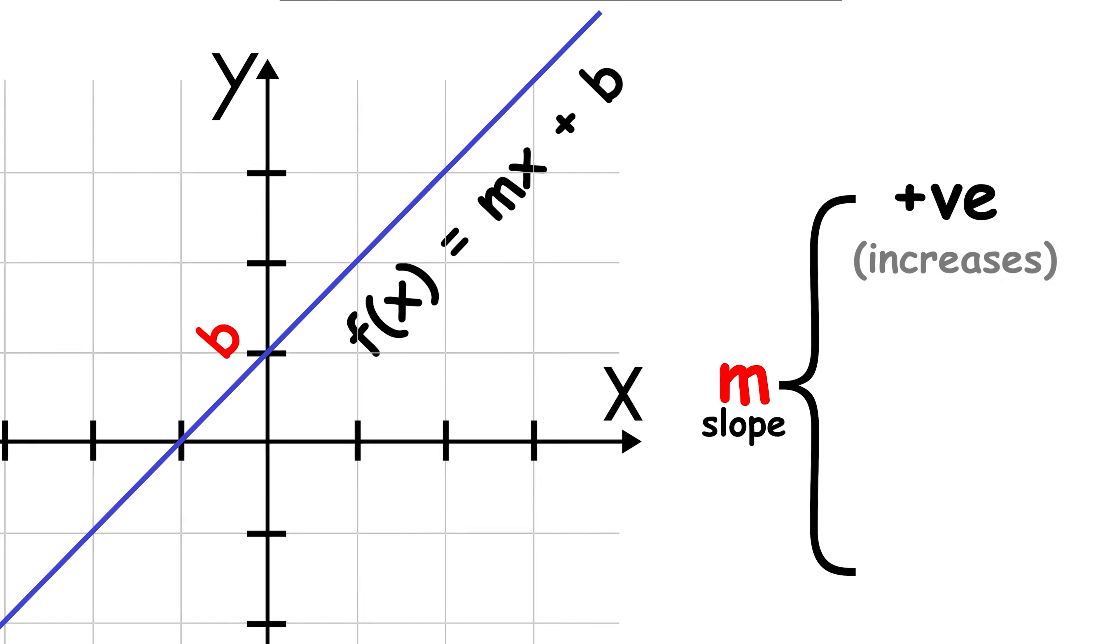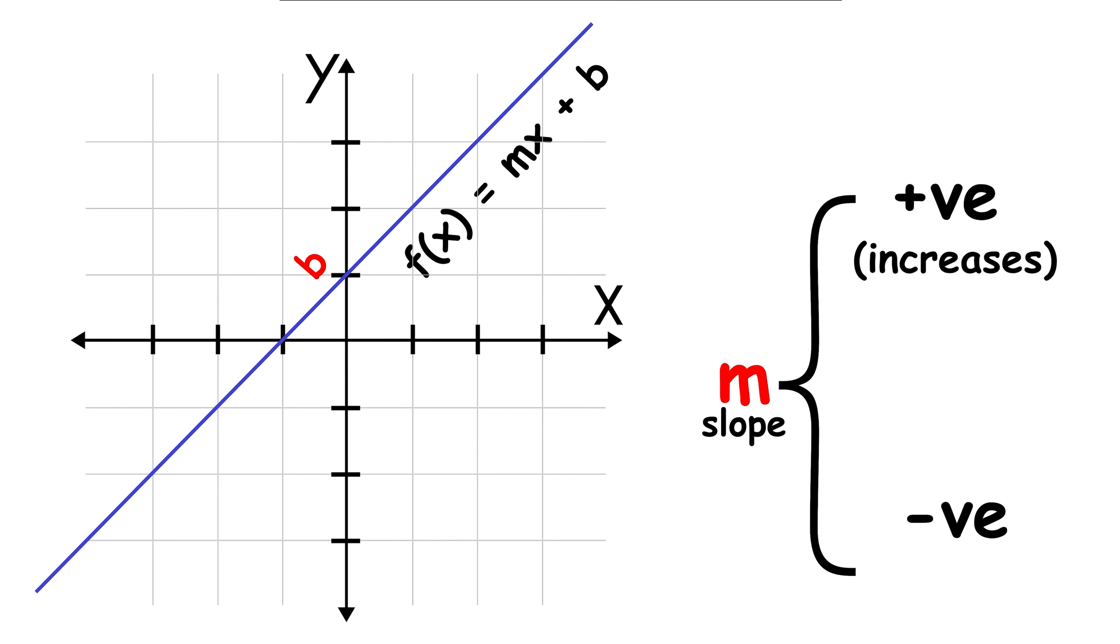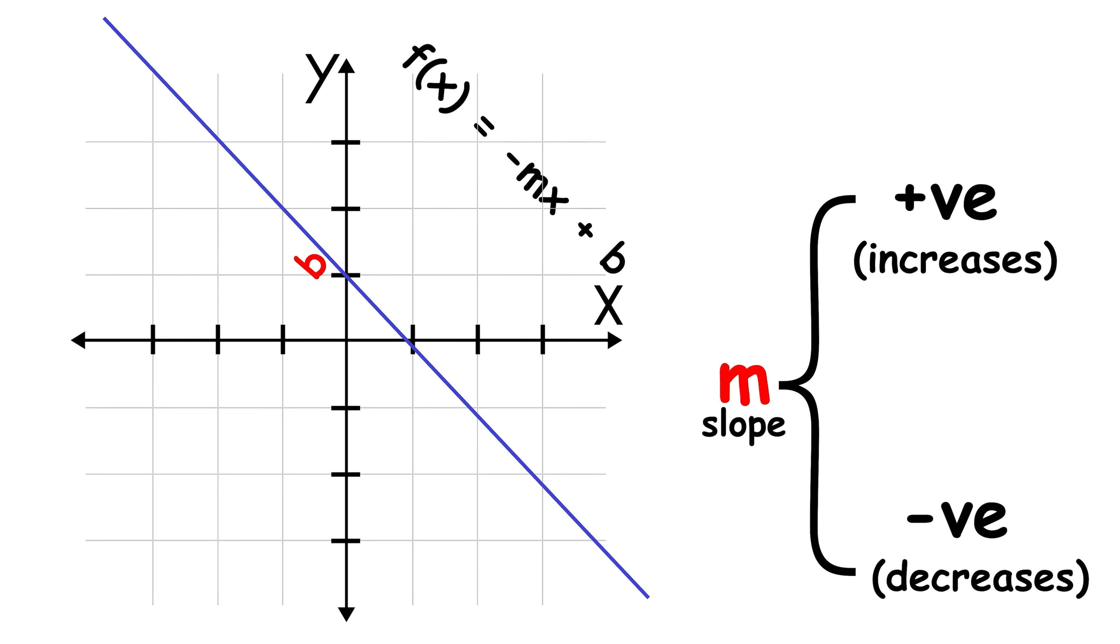If m is positive, the function increases. If it is negative, it decreases. When m is zero, the function is constant.